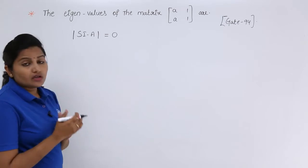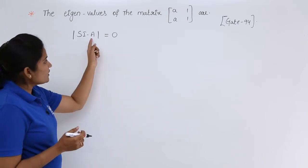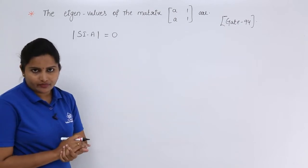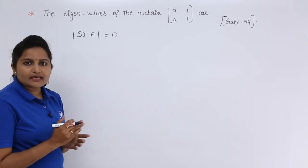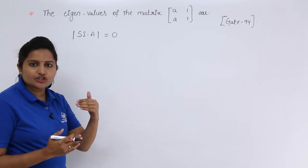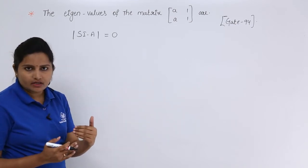Now here, whatever the matrix given, that matrix we need to consider it as A. As you know, I is equivalent to identity matrix, Si is nothing but S 0, 0 S.